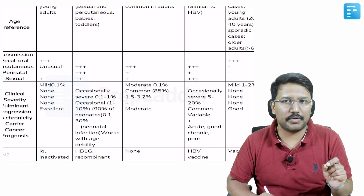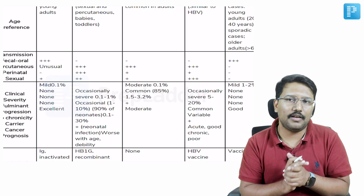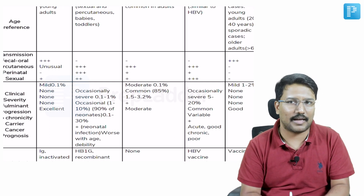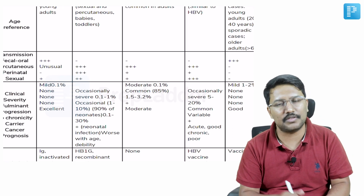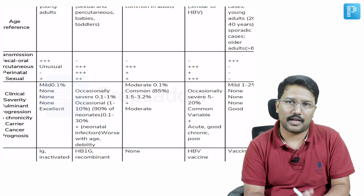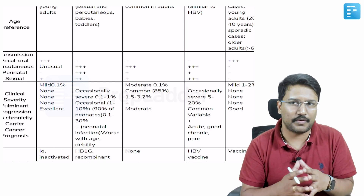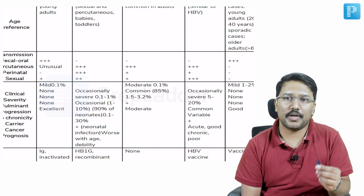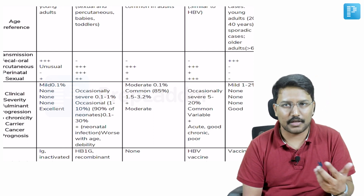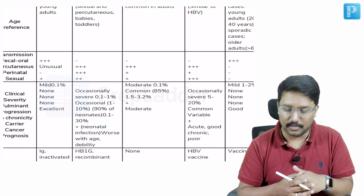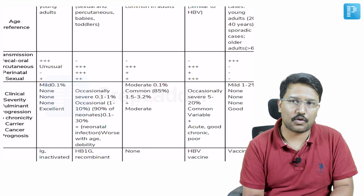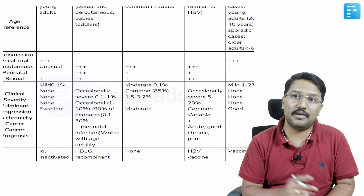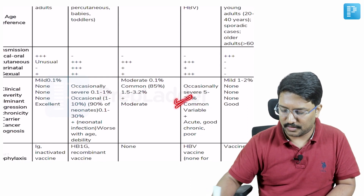In terms of severity, HDV and HBV co-infection are generally not very severe, and chronicity risk is low because the fate of HDV follows the fate of HBV. If both co-occur in an adult, chronicity risk is under 5%. However, when HDV occurs as a superinfection over a pre-existing HBV infection, the liver is already compromised, so chronicity risk is very high — close to 90% — and fulminant liver failure is also common.